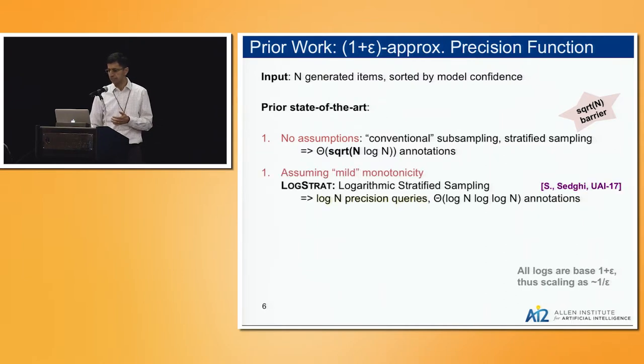We did some work last year and presented at UAI as well, where we said if you do make some assumptions, you can get much further. We had this algorithm called LogStrat for logarithmic stratified sampling, which said that if you assume some mild monotonicity of the data, you can get by with only log n precision queries.